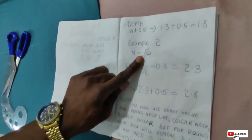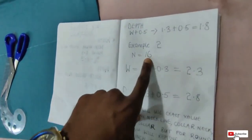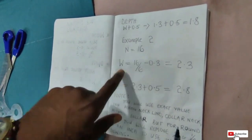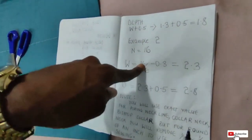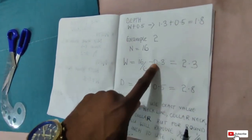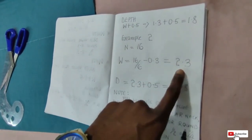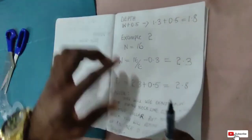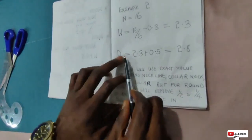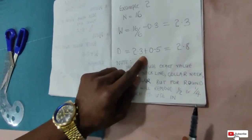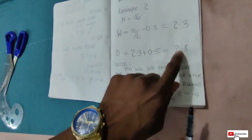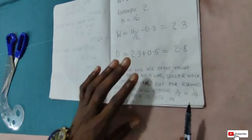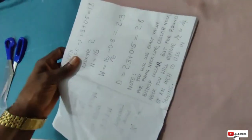Now for the second example, let's say you measure someone's neck as 16. To get the width: 16 divided by 6 minus 0.3, which gives you 2.3. Then the depth value is 2.3 plus 0.5, which equals 2.8 inches. I'll show us that now.